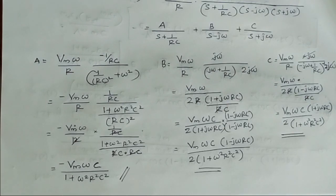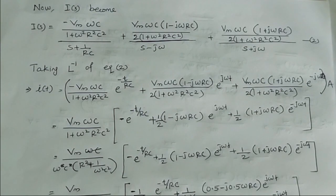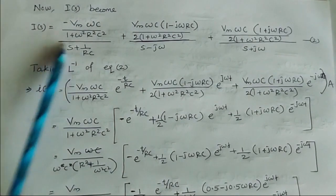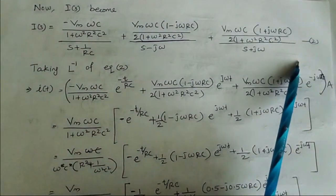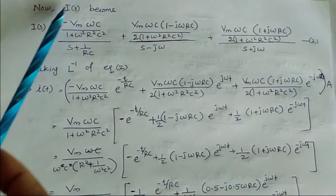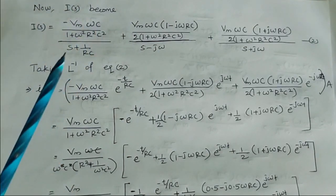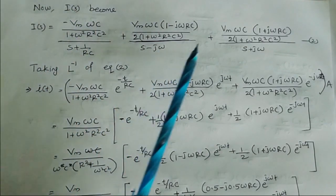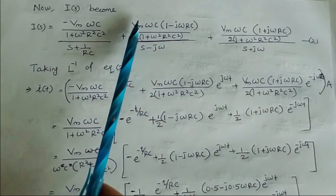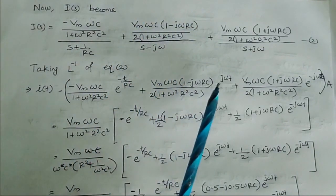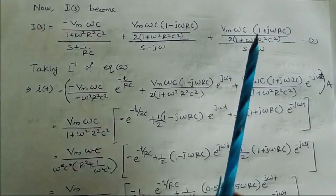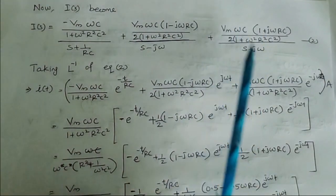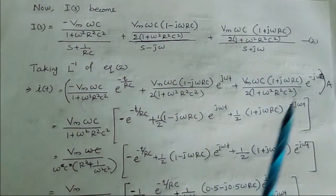Substituting the values of A, B, and C into the I(s) equation — let this be equation number two — we take the inverse Laplace transform. The inverse Laplace of the first part is A·e^(−t/RC), and the inverse of the remaining parts gives B·e^(jωt) + C·e^(−jωt).